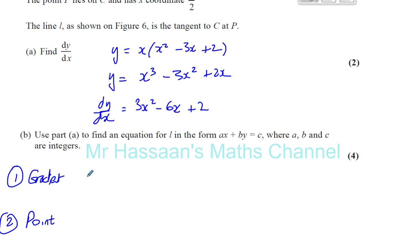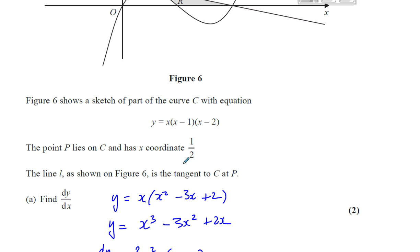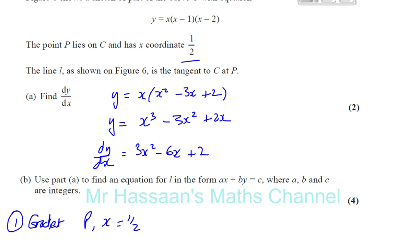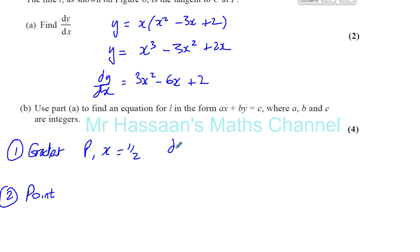Now both of these we can find using what we've just worked out. We know that at P, x equals a half. I can use that to find the gradient because dy dx is the gradient function. So you put x equals a half into this formula: 3 times a half squared minus 6 times a half plus 2, which gives you 3 times a quarter minus 3 plus 2, which is 3 quarters minus 1, giving you negative a quarter.